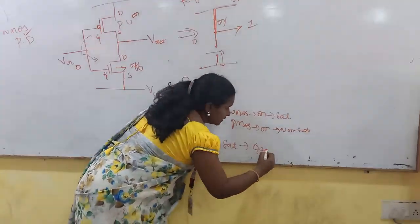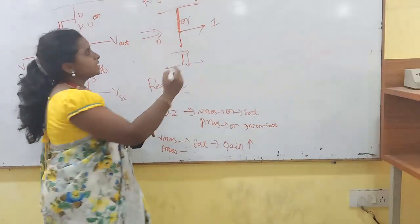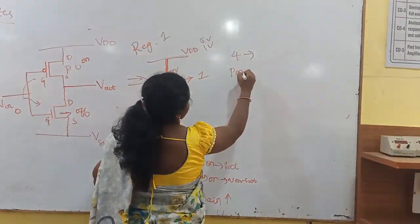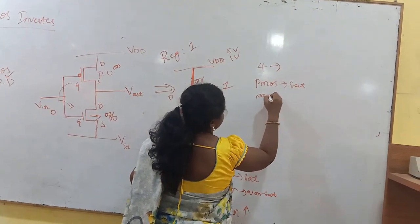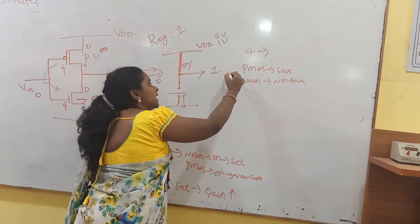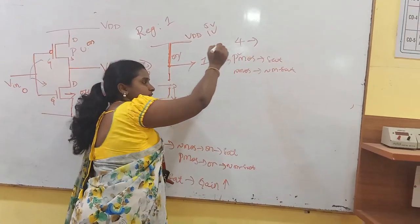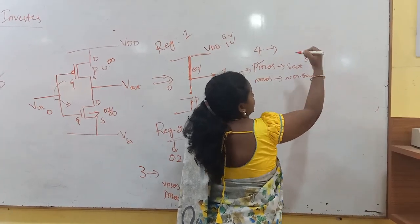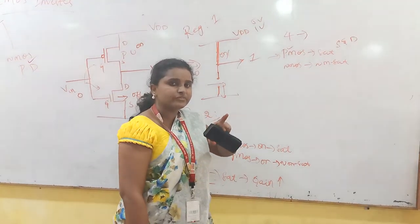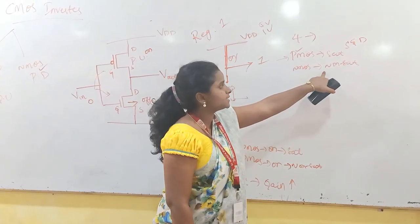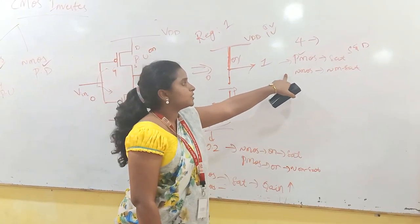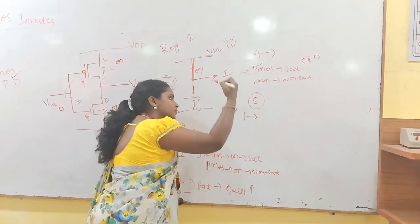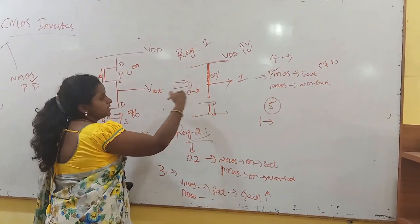For the third region, both NMOS and PMOS transistors will be in the saturation region. In this region only, the CMOS inverter will be having high gain — this is region 3. Coming to region 4, it will be the reverse of region 2. Here, the PMOS transistor will be in saturation and the NMOS transistor will be in the non-saturation region. We are applying a voltage greater than the threshold voltage of the PMOS. There will be a large potential difference between source and drain terminals. The NMOS transistor is also ON, but its potential difference is less compared to the PMOS transistor, so we call it the non-saturation region.